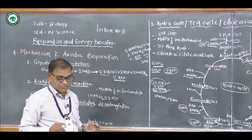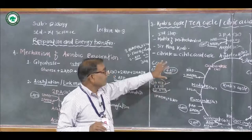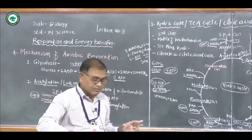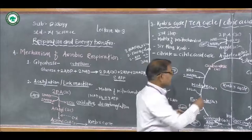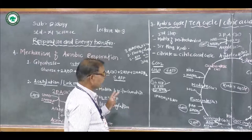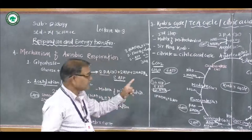Sometimes a question can be asked in board examinations: describe or give a diagrammatic representation of the Krebs cycle, or describe the TCA cycle, for four or five marks. To answer correctly, sequentially write any six steps correctly — if the six steps are sequentially correct, you will get full marks. Missing any steps will result in incomplete marks.